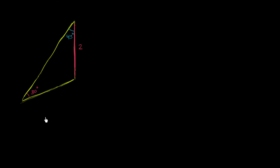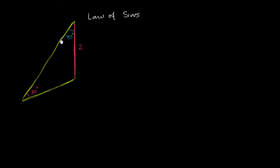The way that we're going to do it, we're going to use something called the law of sines. In a future video, I will prove the law of sines, but here I am just going to show you how we can actually apply it. It's a fairly straightforward idea. The law of sines tells us that the ratio between the sine of an angle and the side opposite to it is going to be constant for any of the angles in a triangle.